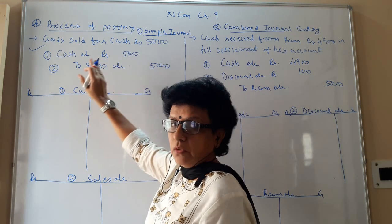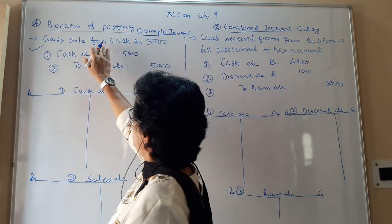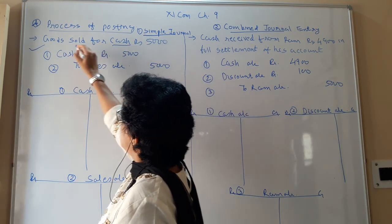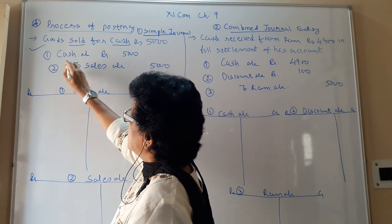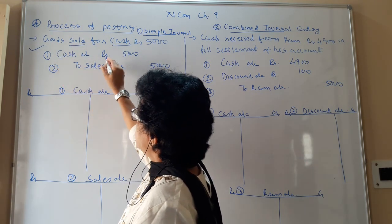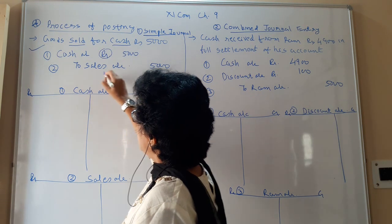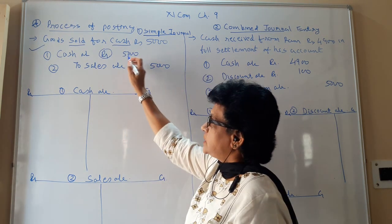The simple journal entry is that goods sold for cash rupees 5,000. You have sold goods, so two accounts are there. One is the cash account, another is the sales account. So the journal entry you have passed: cash account debit, to sales account, credit rupees 5,000.